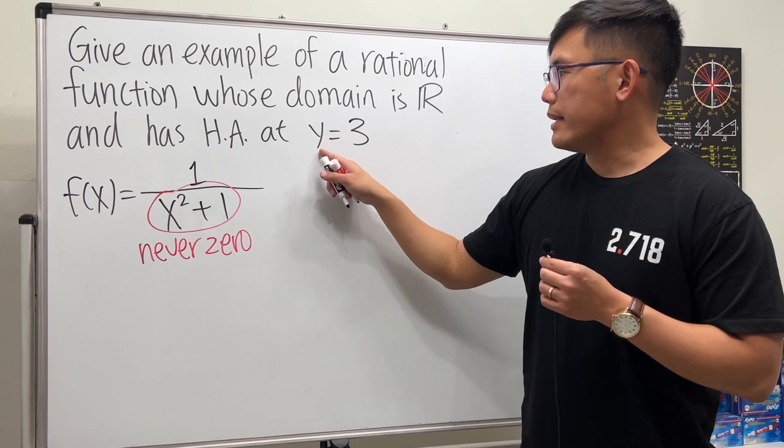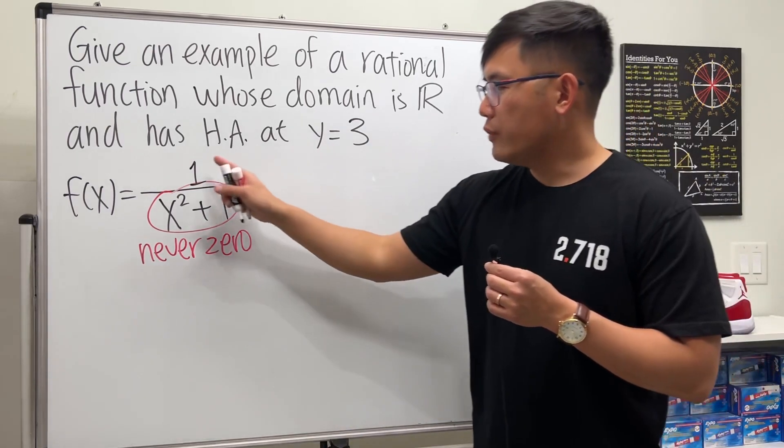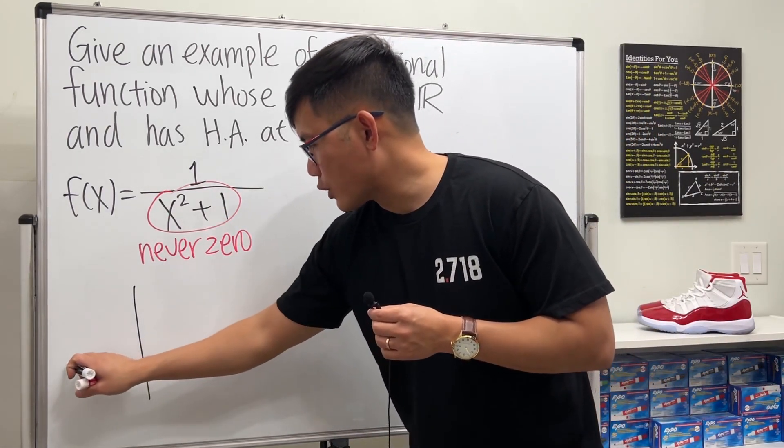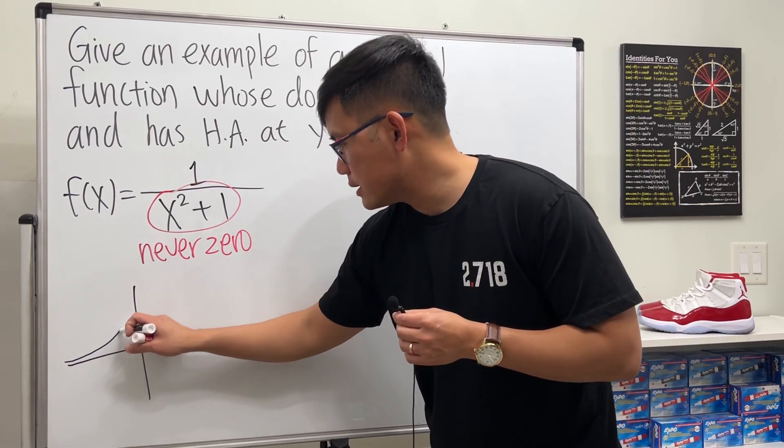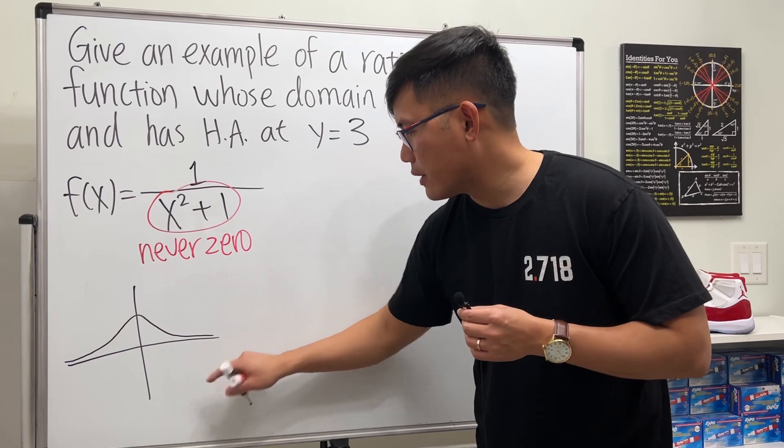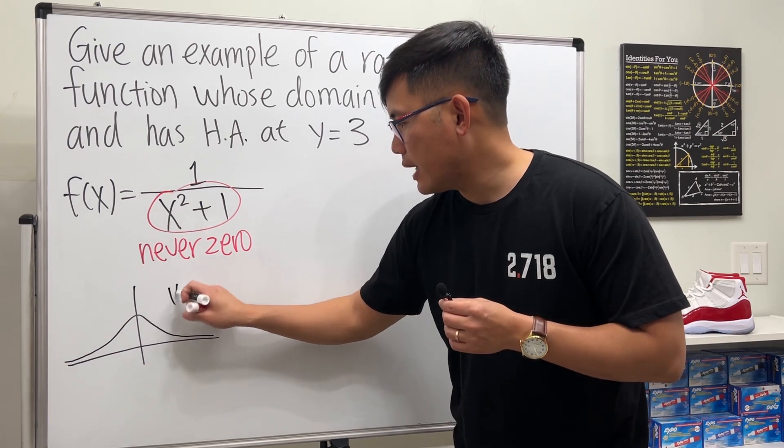But we do have this condition—we also want to have a horizontal asymptote at y equals 3. Well, if we just have this, let me give you guys a graph of 1 over x squared plus 1.